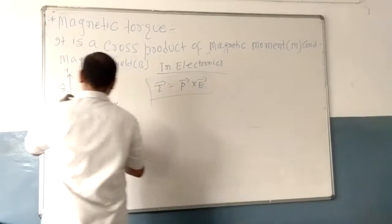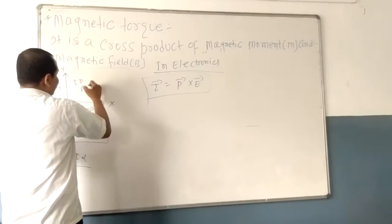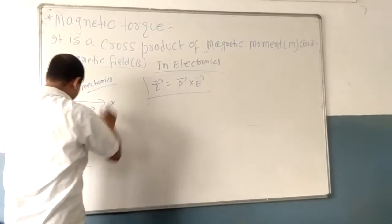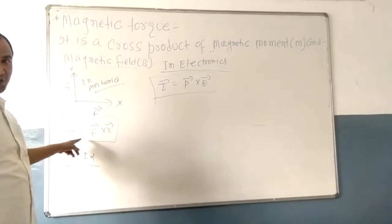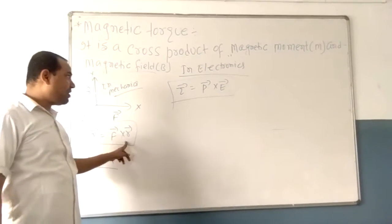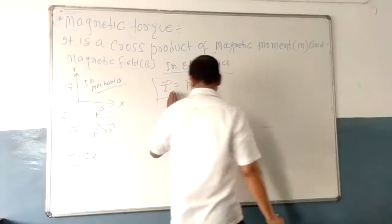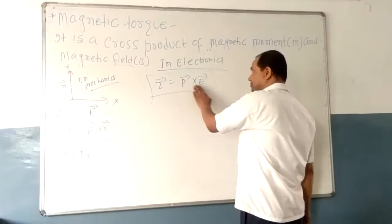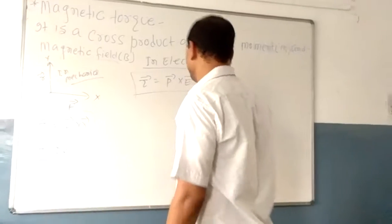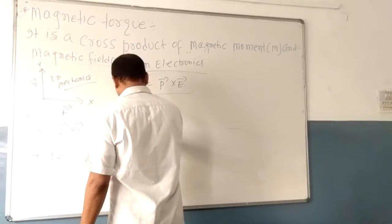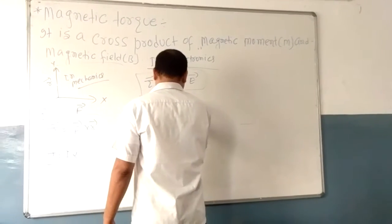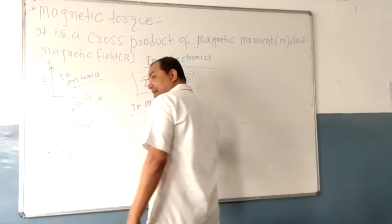So in mechanics, torque is a cross product of force and position vector. In electrostatics, torque is a cross product of electric dipole moment and electric field. And same way, in magnetism, I am going to tell you — because my topic is the magnetic torque.